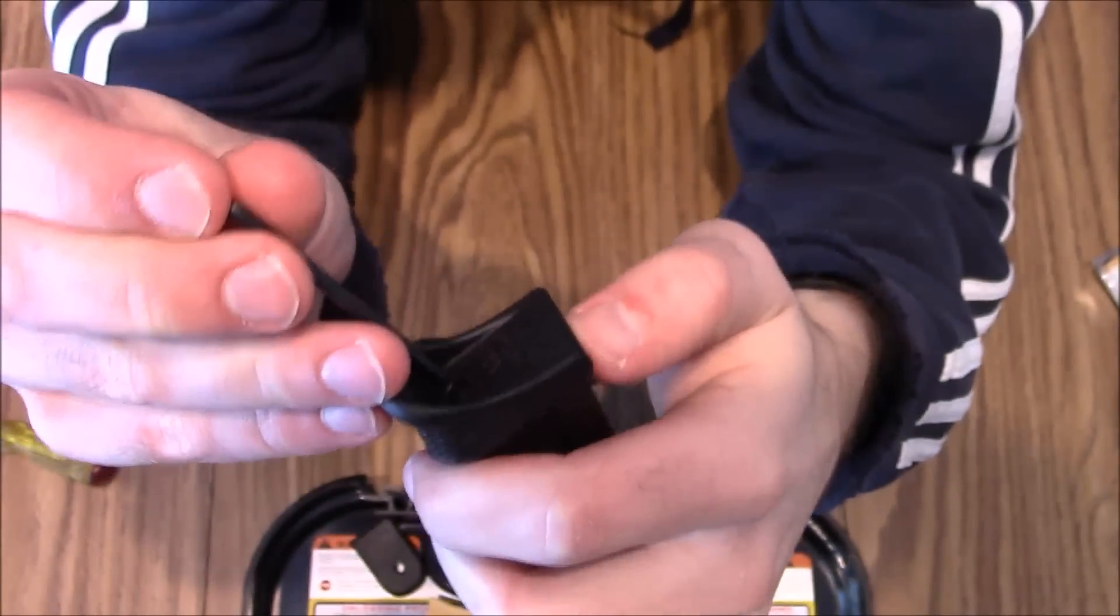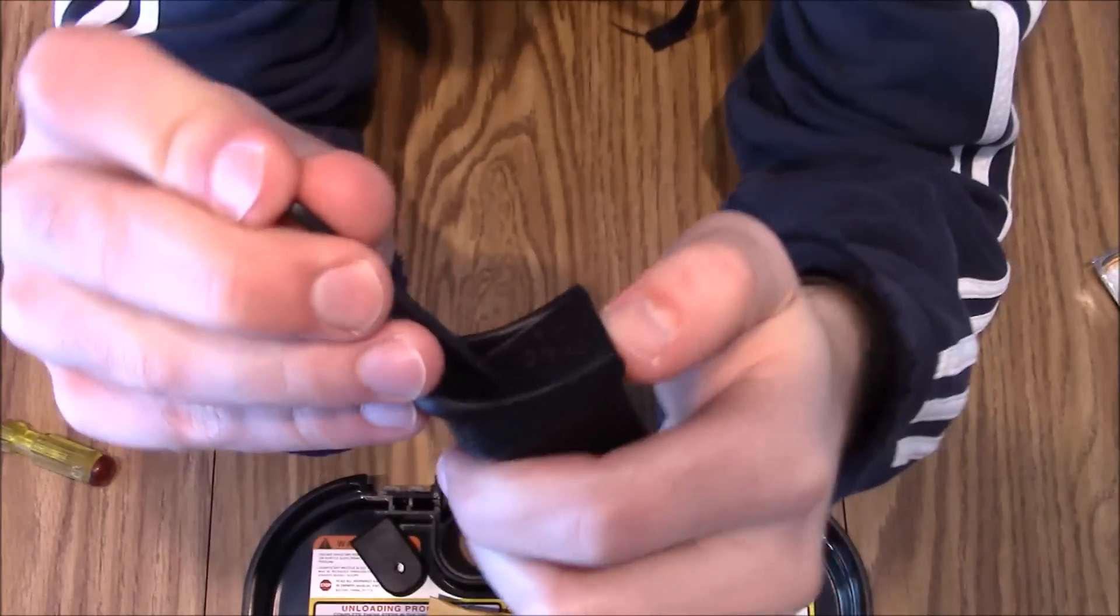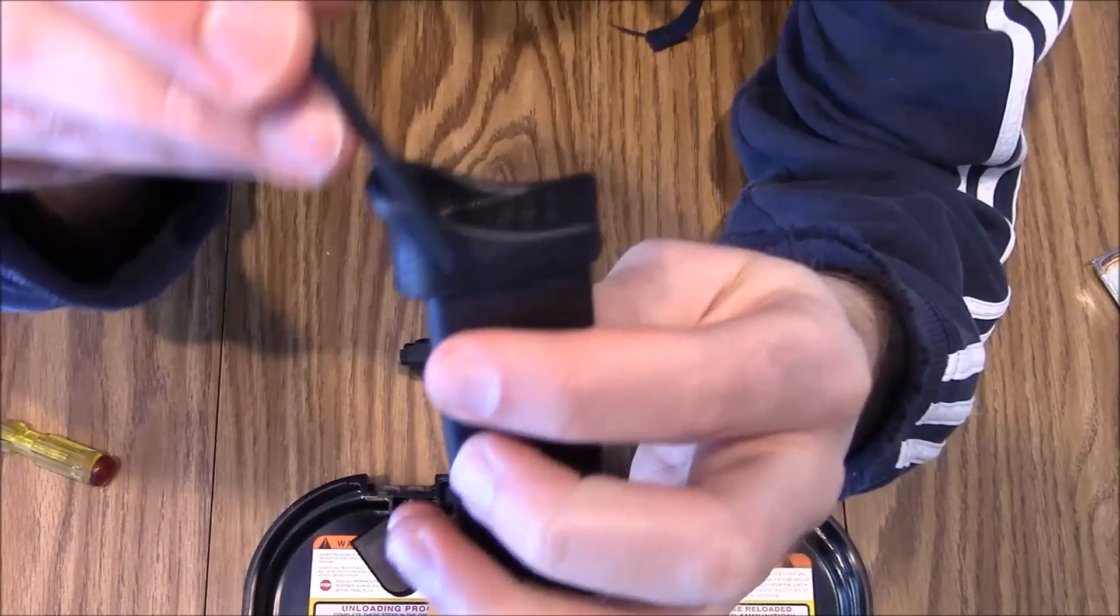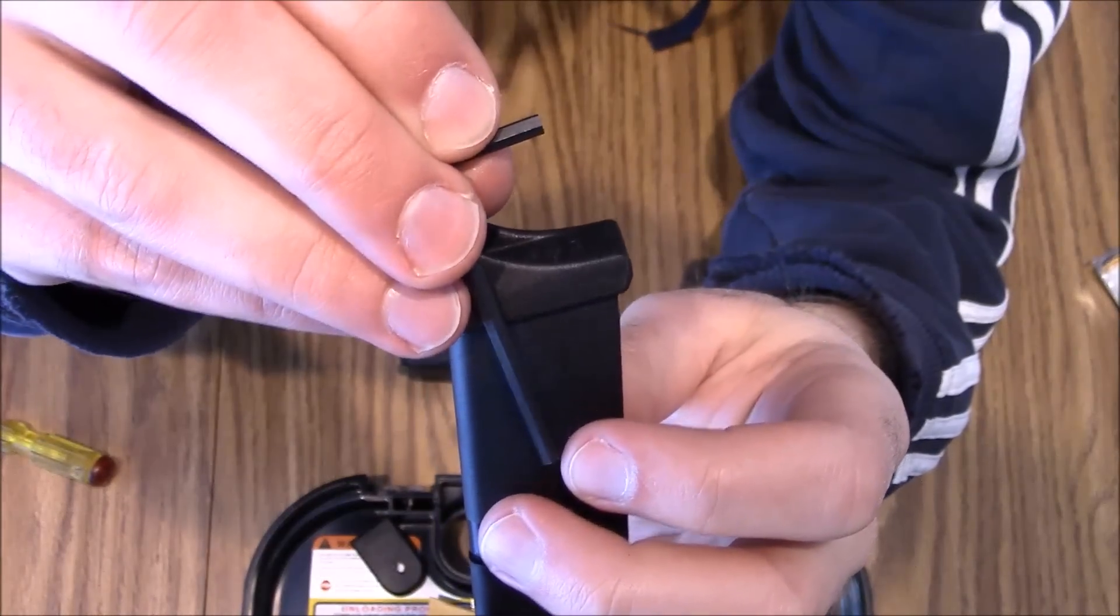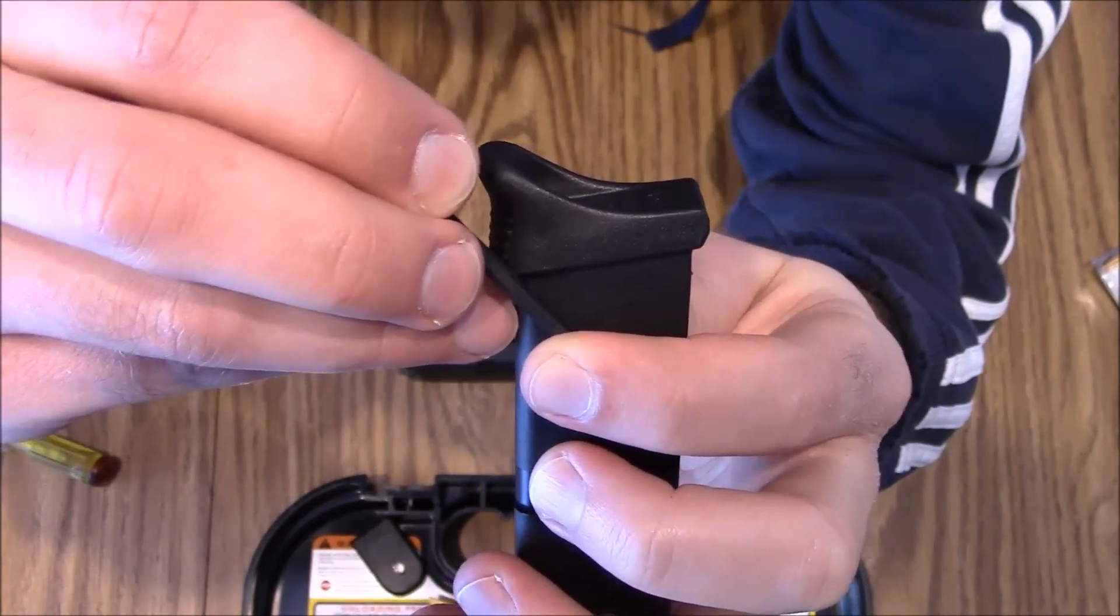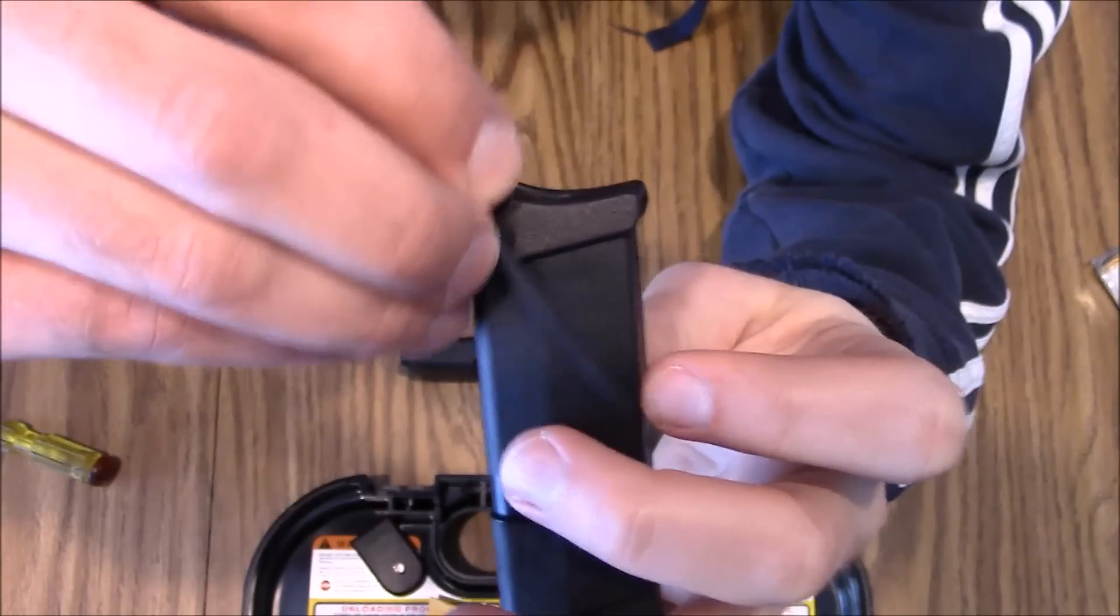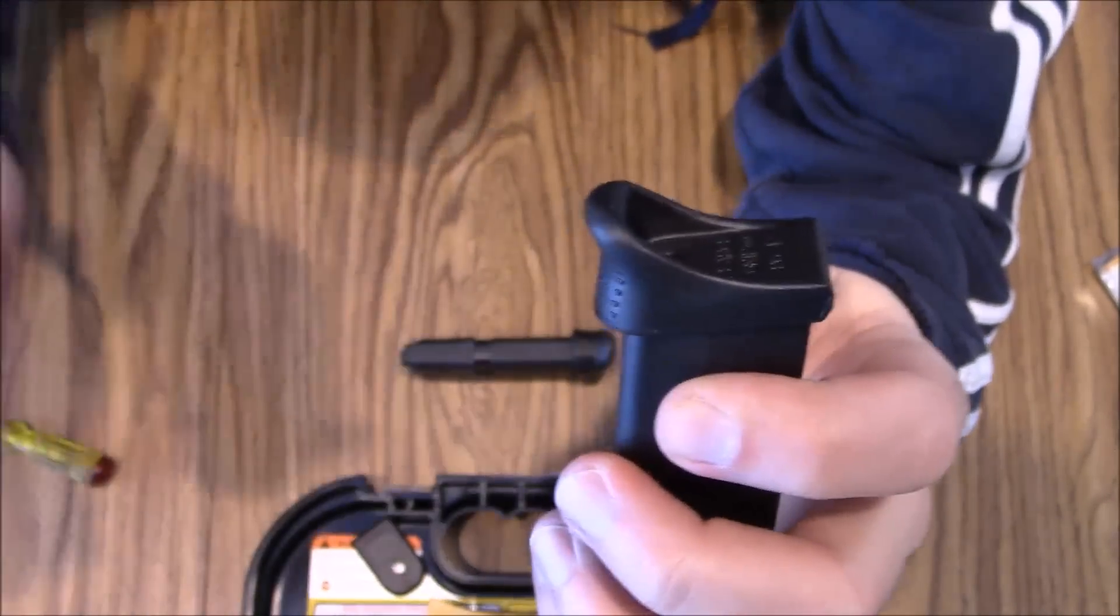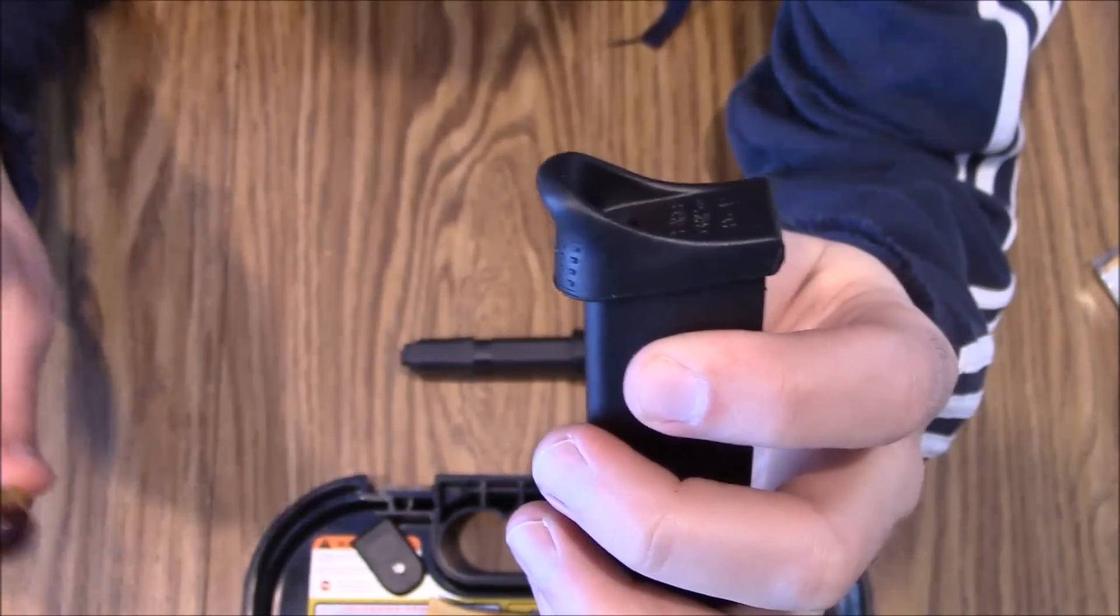So you're supposed to push down on the spring through that hole there and then with the tool. So if you can picture this inside there with the tool, and then you pull it this way so it's going to push against the back wall there of the magazine and then slide this forward. So without the Glock tool, we're going to use something a little longer than this allen key.